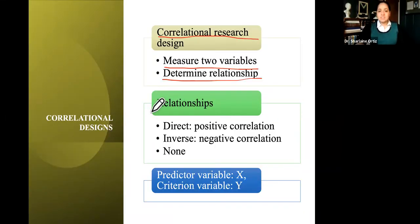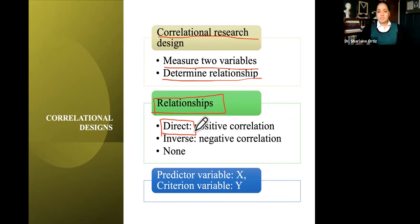There are different types of relationships that variables can carry with one another. First, we talk about a direct correlation, also known as a positive correlation. When you hear the term positive or negative, don't think positive means good and negative means bad — that's not what it means in statistics. A positive or direct relationship means they are moving in the same direction. Likewise, we have an inverse relationship, also called a negative correlation, where the relationship goes in opposite directions.